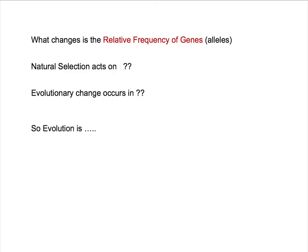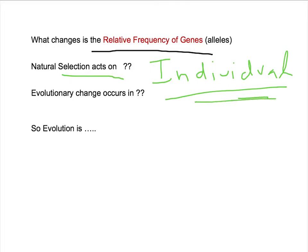So just to recap and to remind you what it is here, what changes is the relative frequency of genes. And what natural selection acts on is the individual. So it's the individual with its spots or with its solid bright red color that's being selected upon. And in this example, our selective agent was some kind of a bird predator. So natural selection acts on the individuals. But the evolutionary change occurs where? Let me pause so you can say it out loud to yourself. Right? Evolutionary change occurs in the population.